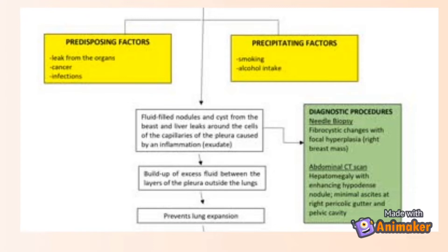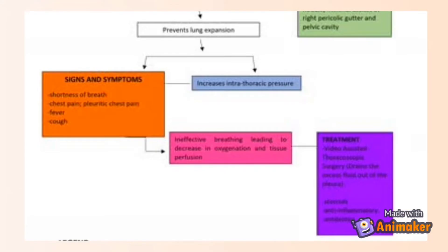With inflammation, there will be a buildup of excess fluid between the layers of the pleura outside the lungs, which will prevent the lung from expanding effectively. With ineffective lung expansion, it causes increased intrathoracic pressure, and signs and symptoms arise: shortness of breath, chest pain, pleuritic chest pain, fever, and cough. The nursing diagnosis is ineffective breathing leading to decreased oxygenation and tissue perfusion. Treatment includes video-assisted thoracoscopic surgery to drain excess fluid from the pleura, as well as steroids, anti-inflammatory drugs, and antibiotics — all per the medical doctor's order.